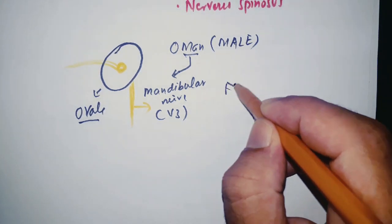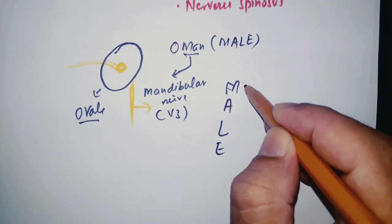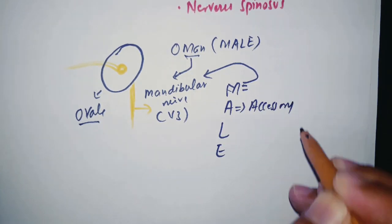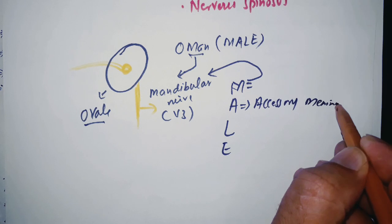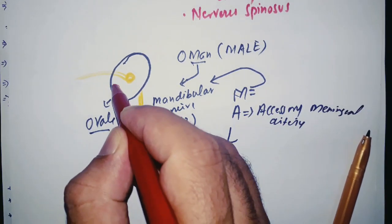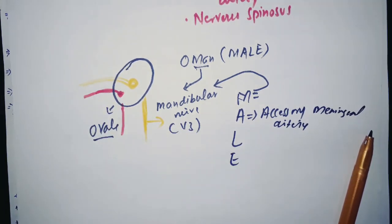Now for MALE, this M was for mandibular, so remove it. From A you will remember accessory meningeal artery. So accessory meningeal artery passes through this area and it is the branch of maxillary artery.